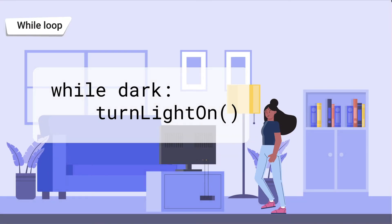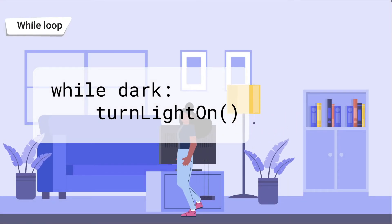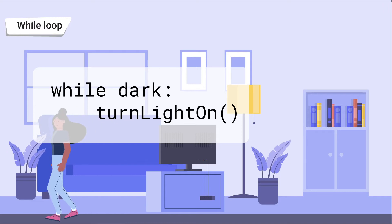This code now helps you navigate in the dark without tripping over by controlling the sensor in the light. While it is dark, turn the light on.